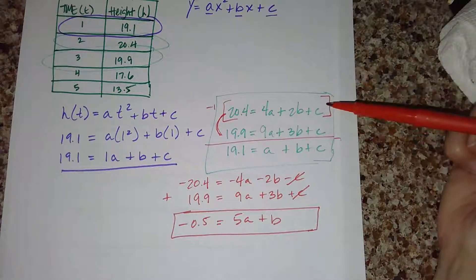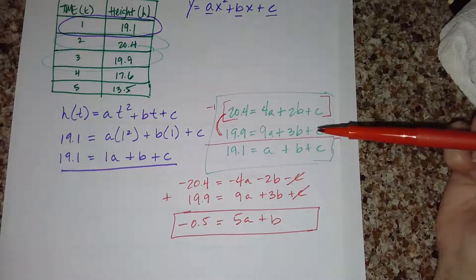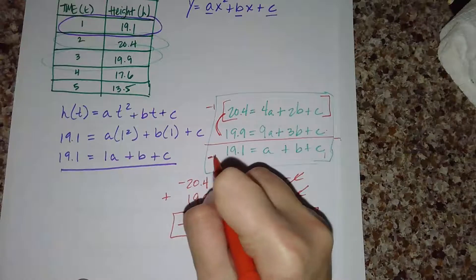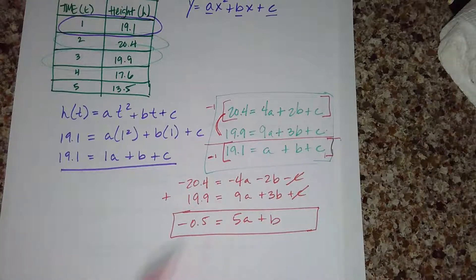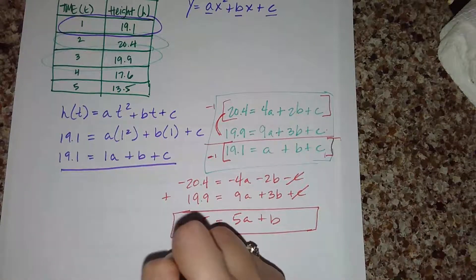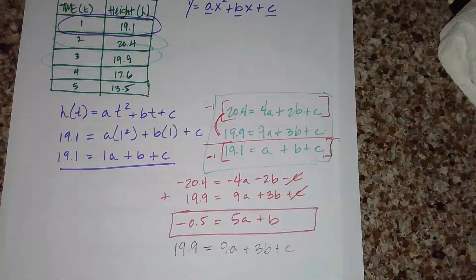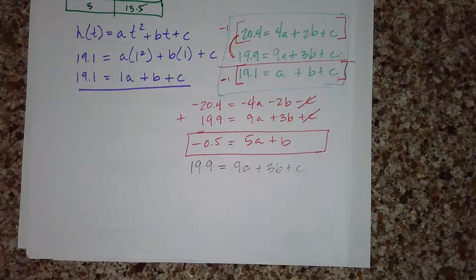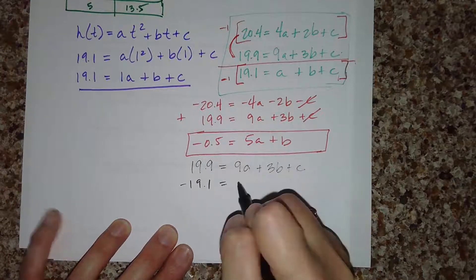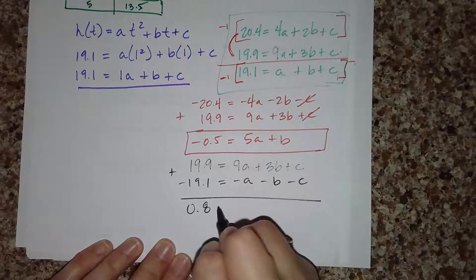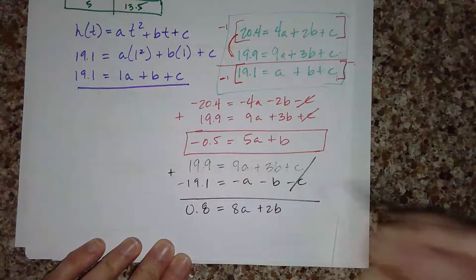Since I used equations one and two to eliminate c, I now use equations two and three to do the same. I multiply equation two (20.4 = 4a + 2b + c) and keep equation three (19.9 = 9a + 3b + c), then multiply equation one (19.1 = a + b + c) by negative one: negative 19.1 equals negative a minus b minus c. Adding to equation three, c cancels: 0.8 equals 8a plus 2b.